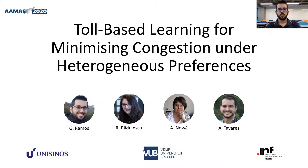Hello everyone, my name is Gabriel. I'm going to present a work: Toll-based learning for minimizing congestion under heterogeneous preferences. This work is a joint collaboration between Unicinus, VUB and Urbis.